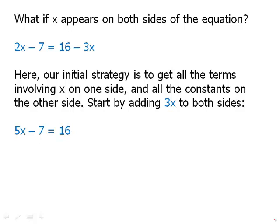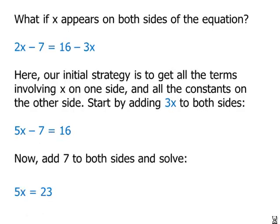Now that we have everything on both, we have all the x's on one side, now we can just add 7 of both sides. We get 5x equals 23. And divide, we can express the answer either as an improper fraction or a mixed numeral or a decimal, depending on what the answer was looking for.